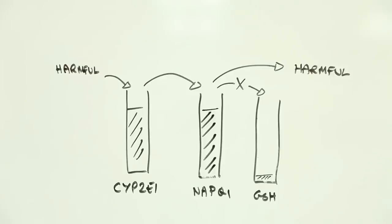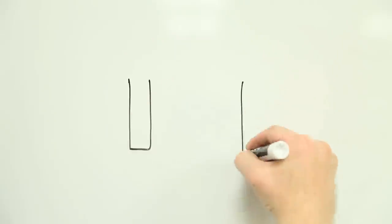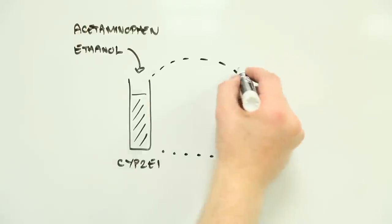So what has this got to do with alcohol consumption? Ethanol is similarly dealt with in the liver by the same CYP2E1 enzyme, which means that if you have both ethanol and acetaminophen in your system, there are competing demands for a limited supply of the enzyme.